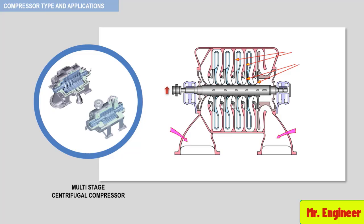Here you can see the cut section of a horizontally split multistage centrifugal compressor. In multistage compressors, after compression across one stage, the gas is routed to the entry of the next impeller, and so on. So, the gas is progressively compressed. In this video, we'll see together the different elements or components that make multistage centrifugal compressors. The objective is to list these elements and get to know their location inside the machine.